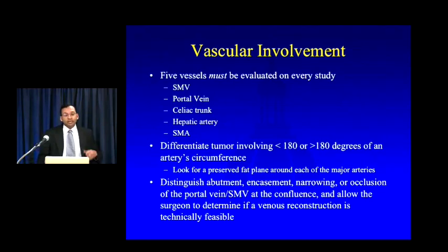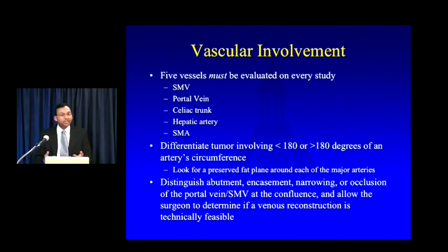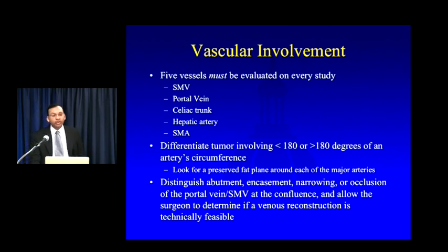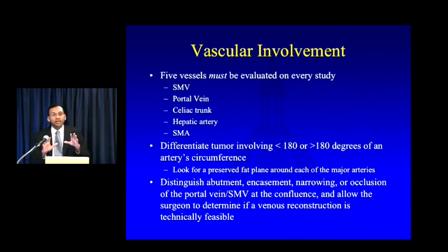Your job as a radiologist is to present the data and allow surgeons and oncologists to determine whether to take the patient to the operating room. The information they need hinges on five vessels: report the relationship of the tumor with the portal vein, the SMV, the portal-SMV confluence, the celiac trunk, the hepatic artery, and the SMA. The surgeon wants to know if those vessels are involved and to what degree.